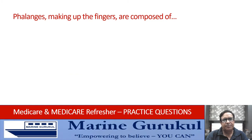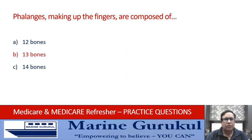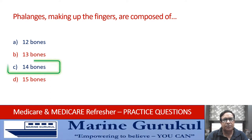Phalanges making up fingers are composed of 12 bones, 13 bones, 14 bones, or 15 bones. Phalanges making up the fingers are composed of 14 bones. The answer is C.